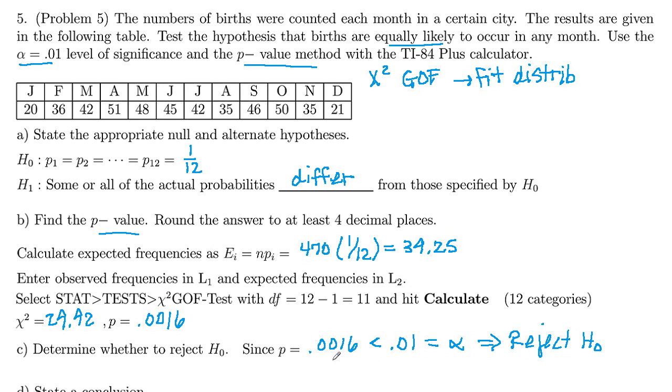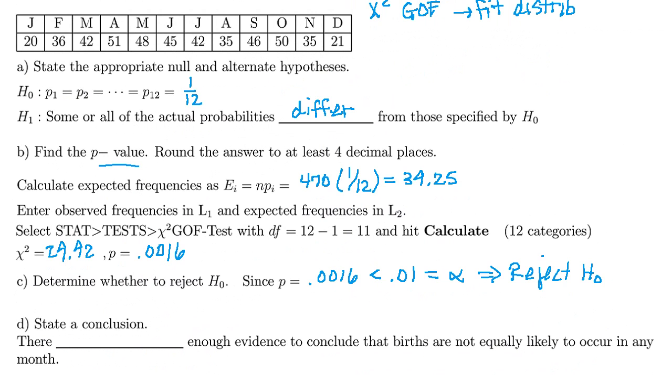So remember your p-value is measuring how extreme your sample is. And so this is saying that our sample here is too extreme to be due to chance. There has to be something going on here.